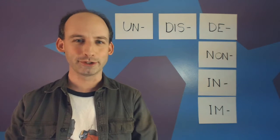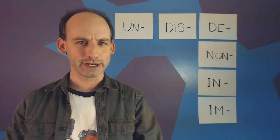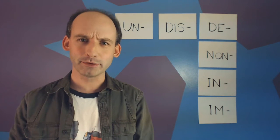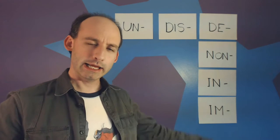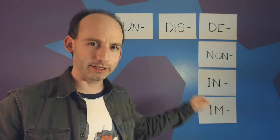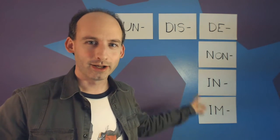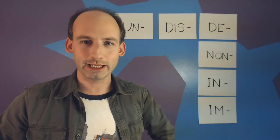Welcome to Learning English with NeverDot. I'm NeverDot. Today we're learning about opposites and how to stick a prefix on a word to make it an opposite word. It could be any one of these six prefixes — pick one: UN, DIS, DE, NON, IN, IM.